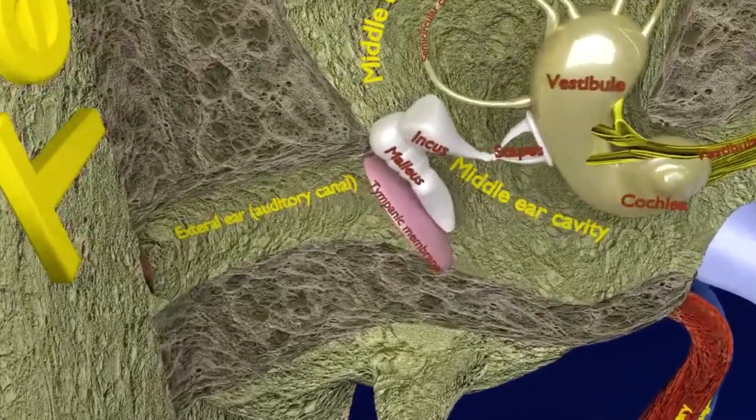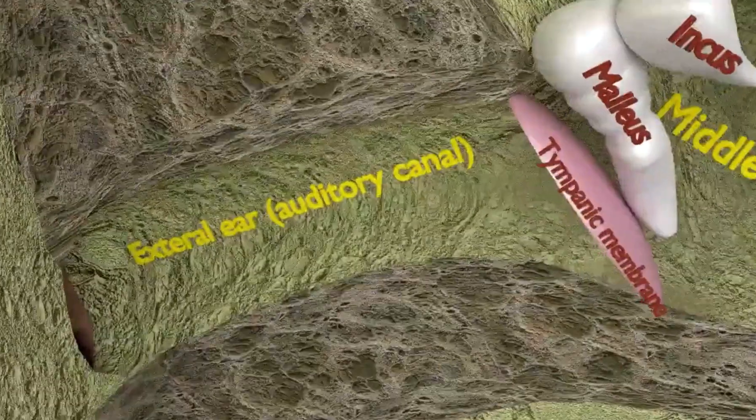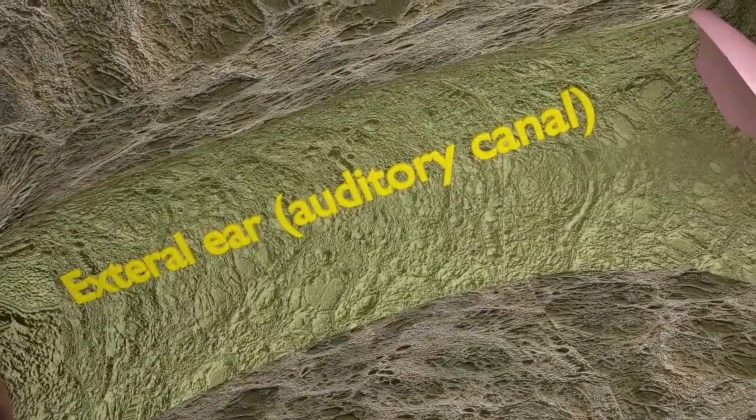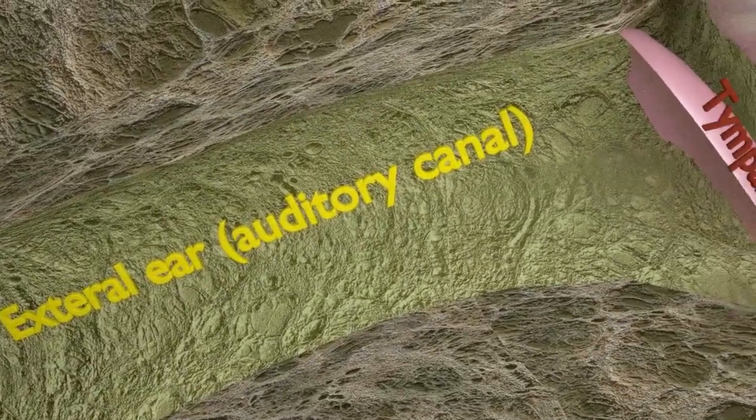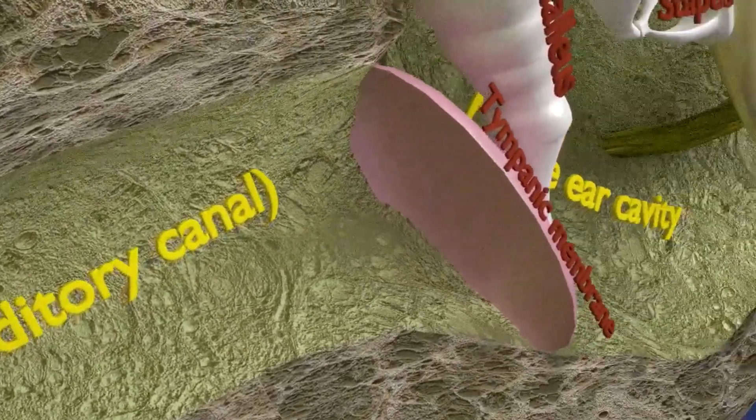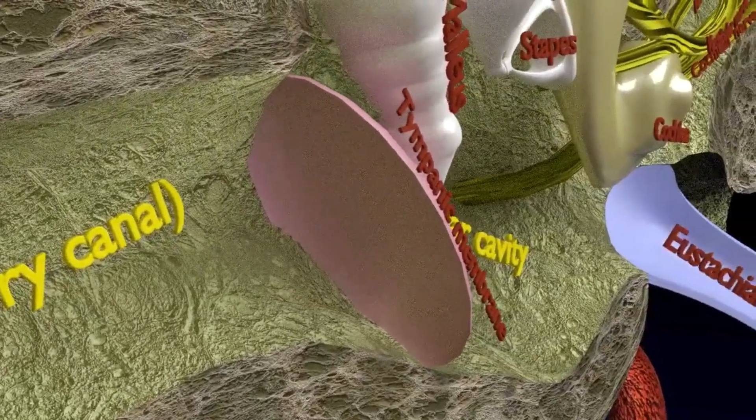The external ear is formed by the pinna and the external auditory canal, which receives sounds and transmits them to the middle ear via the eardrum.